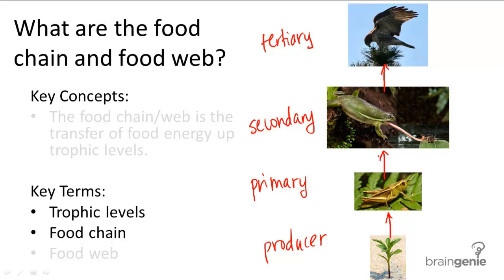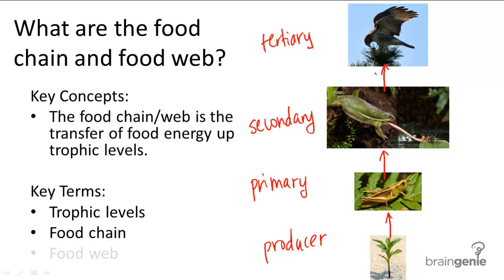So notice how I'm drawing the arrows up in this food chain and not down. The arrows represent energy flow. So the energy is flowing from the plant to the grasshopper, the grasshopper to the frog, the frog to the eagle, because essentially the food chain is showing the transfer of food energy up the trophic levels.